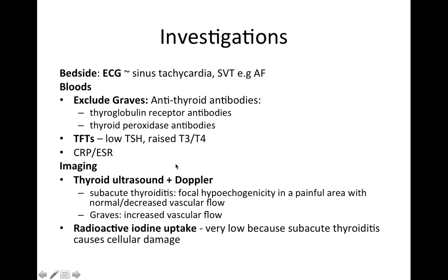In terms of investigations, do an ECG to look for sinus tachycardia and supraventricular tachycardia such as atrial fibrillation. For bloods, exclude Graves' by doing antithyroid antibodies such as thyroglobulin receptor antibodies and thyroid peroxidase antibodies. Thyroid function tests — expect low TSH and raised T3 and T4, as well as raised CRP and ESR. For imaging, do thyroid ultrasound with Doppler. In subacute thyroiditis, expect focal hypoechogenicity in the painful area with normal to decreased vascular flow, whereas in Graves' disease you would see increased vascular flow.